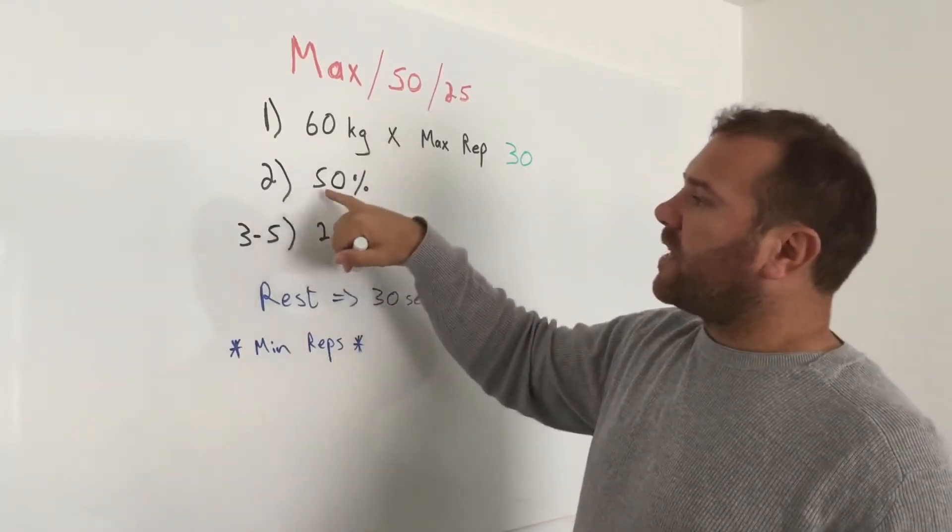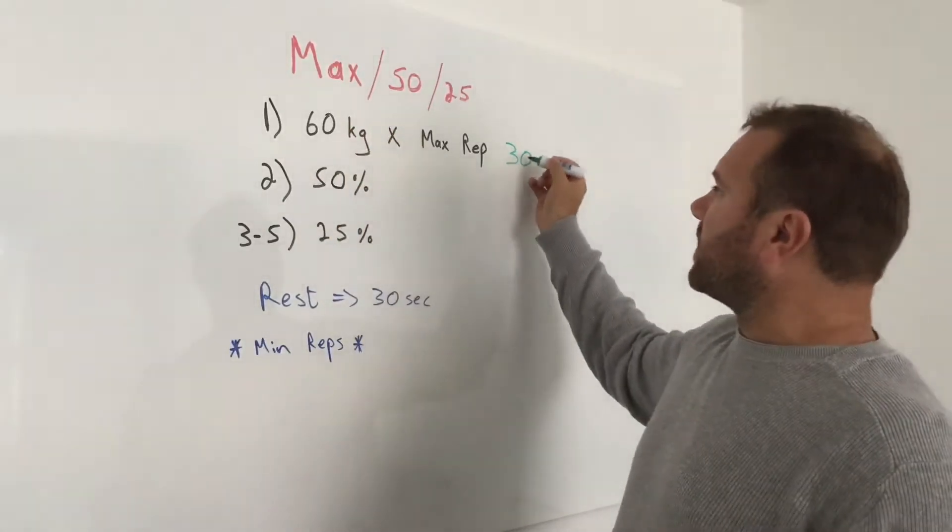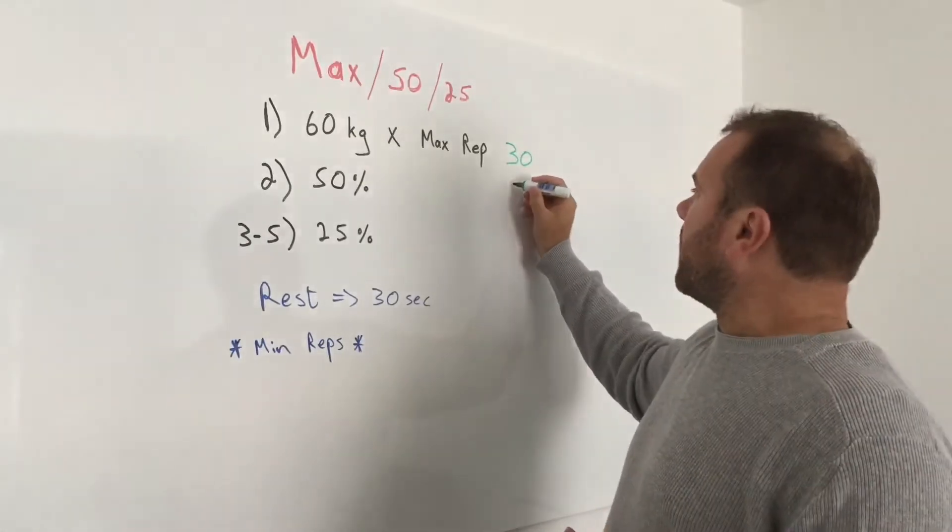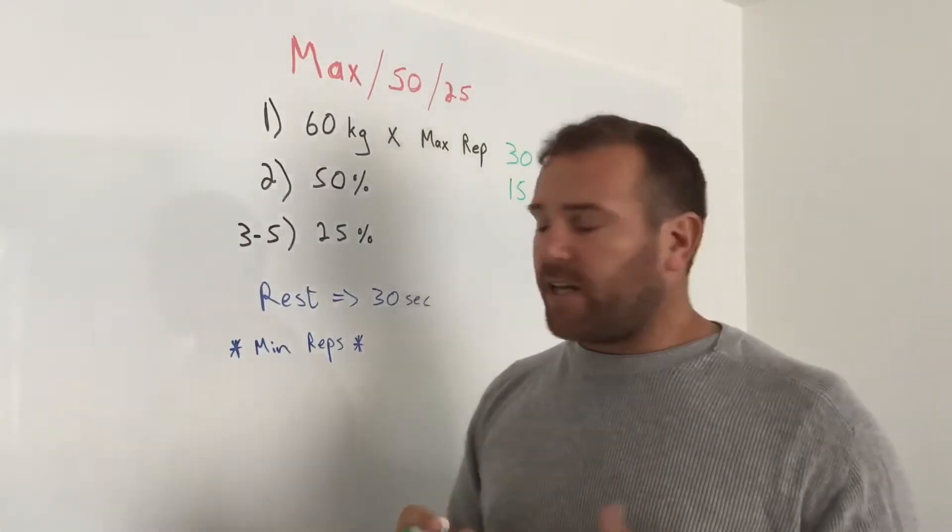Set two, you're going to do 50% of the reps that you did in round one. So if we did 30 reps, half of that is 15. We're going to pump out 15, but that 15 is the minimum amount of reps.